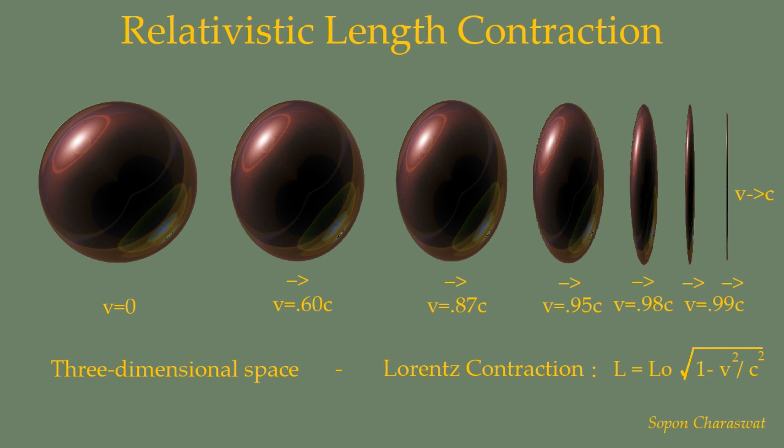Length contraction is a phenomenon where the length of a moving object appears shorter than the length of the object at a stationary point. This contraction occurs along the same direction as the observed object's motion. For everyday Earth movement this effect is negligible, but as an object's speed approaches the speed of light, the result becomes noticeable as shown by the formula.